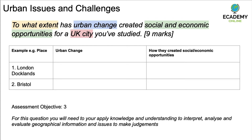Here's a good table you can use. On the left hand side you can break down the example that you're going to look at — for example London Docklands or Bristol. Write down some bullet points of urban change that have occurred in those particular places and then identify some social and economic opportunities that have been created for those particular places as well.